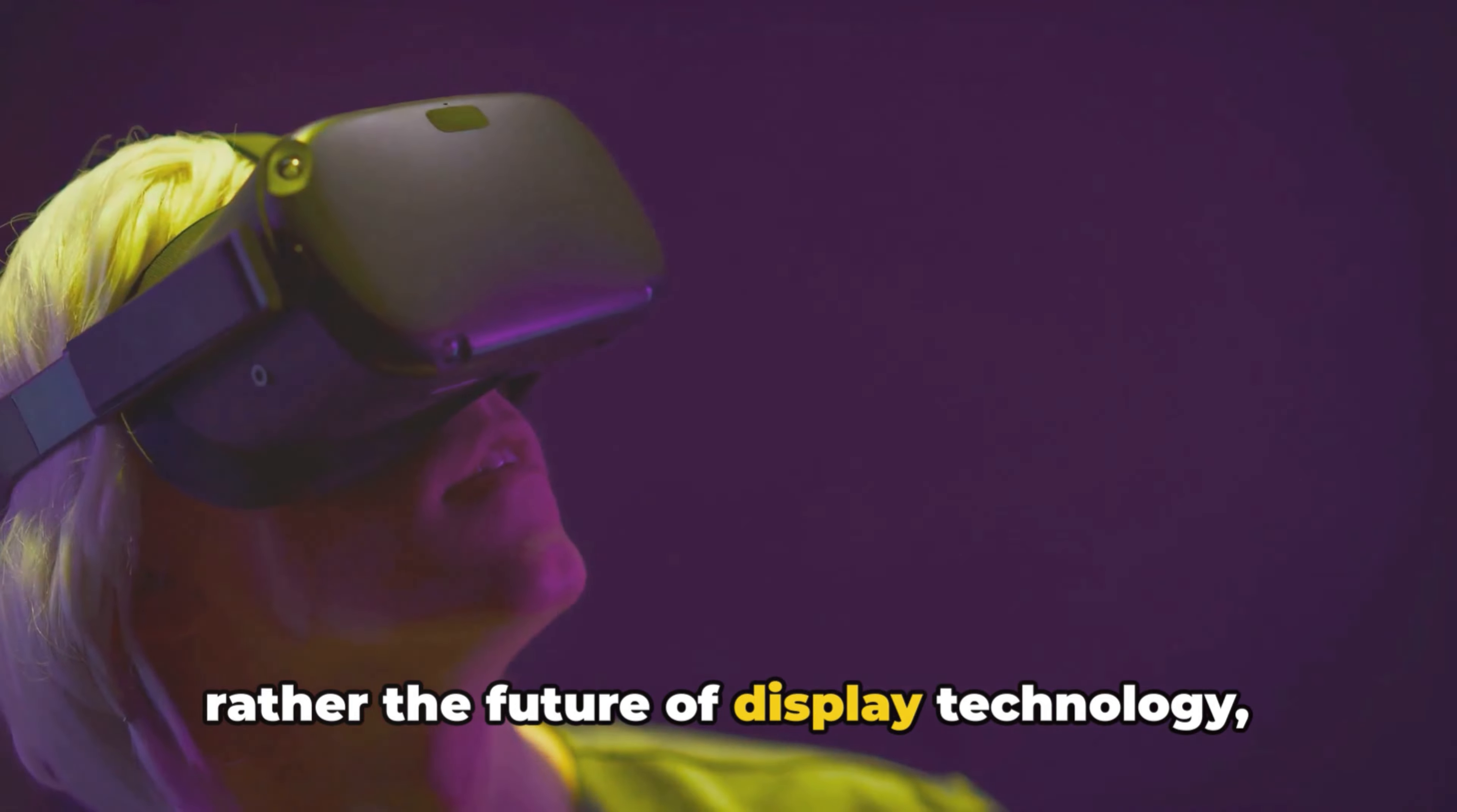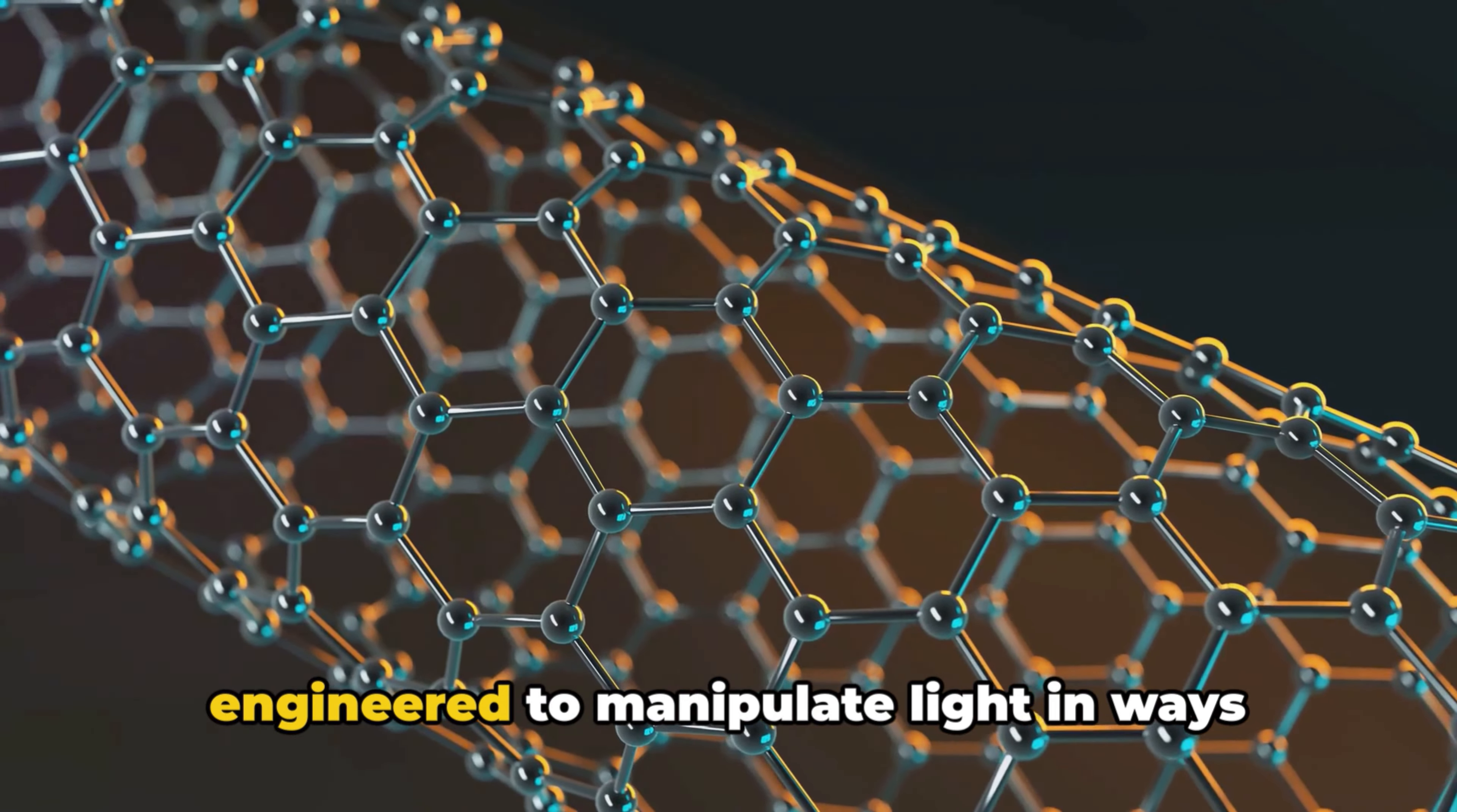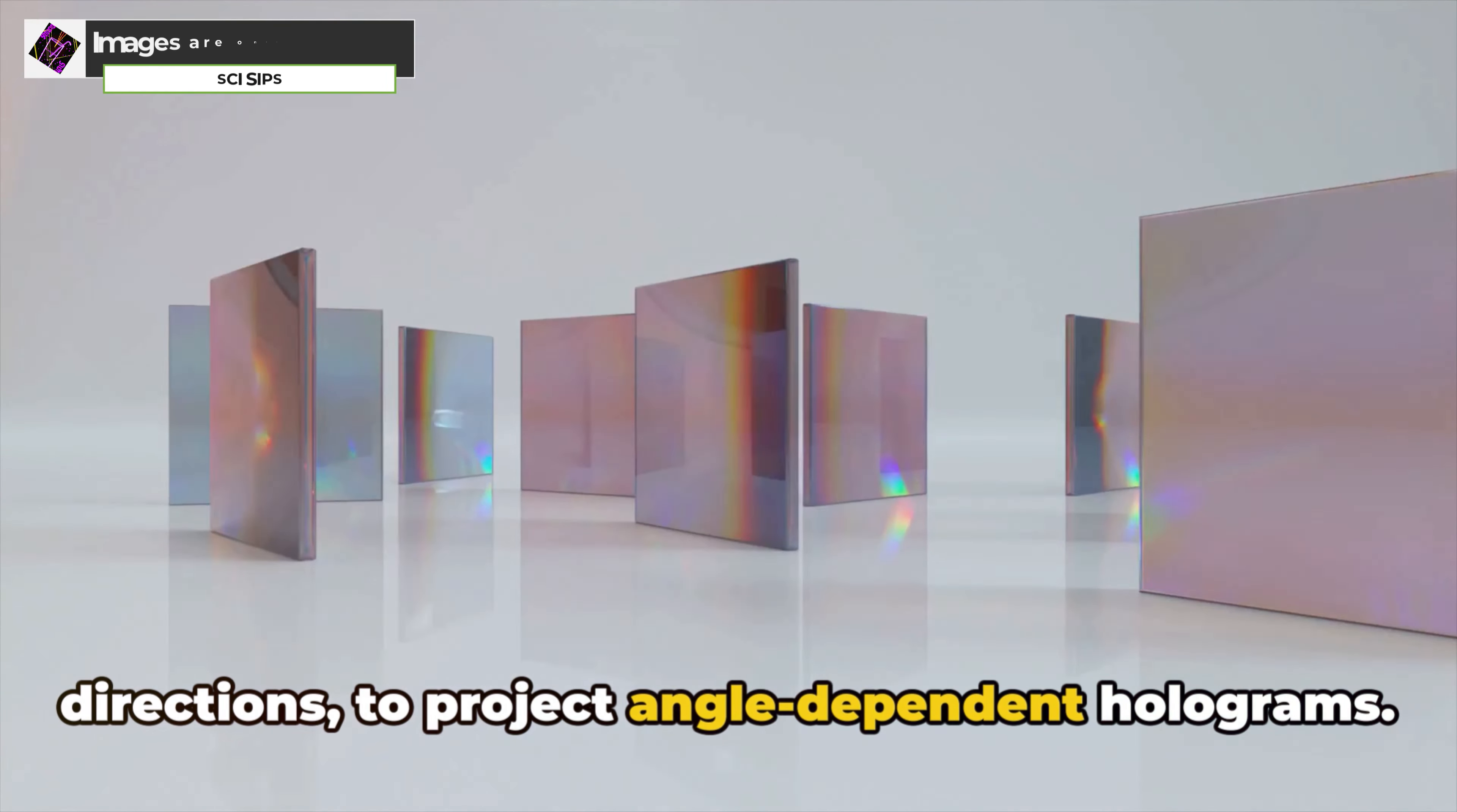Metasurfaces, the unsung heroes of holographic displays, are ultra-thin layers of artificial nanostructures engineered to manipulate light in ways that ordinary surfaces cannot. They control light dispersion, the process that scatters light in an array of directions to project angle-dependent holograms.